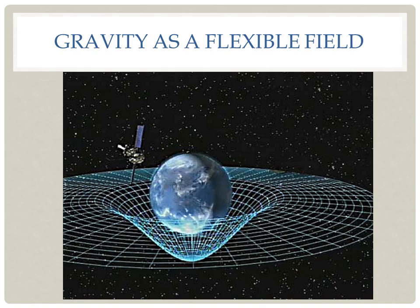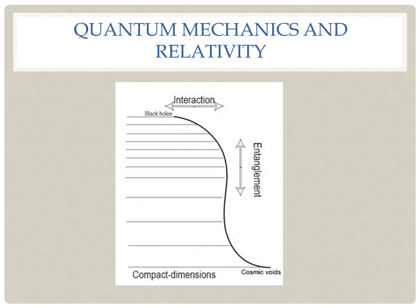Gravity is often represented as a flexible field. Its curvature directs the movement of objects. When we look at particles, we can see them as the energy vibrations represented by these horizontal lines — each line represents different energy levels. The particle's connection to gravity is shown on the right-hand side by the S-shape curve.